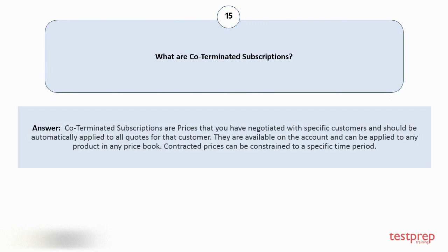Question number fifteen: What are coterminated subscriptions? Coterminated subscriptions are prices that you have negotiated with specific customers and should be automatically applied to all quotes for that customer. They are available on the account and can be applied to any product in any price book. Contracted prices can be constrained to a specific time period.